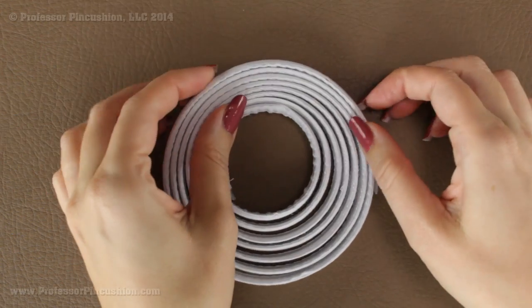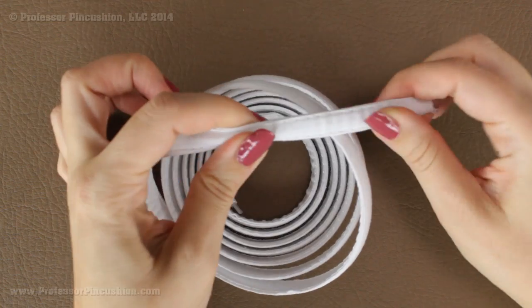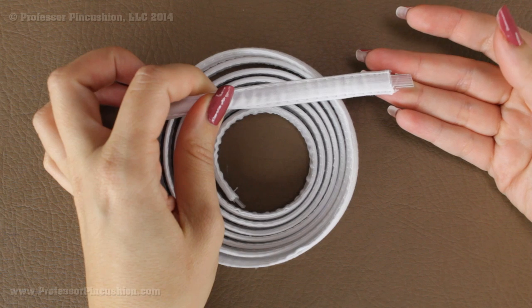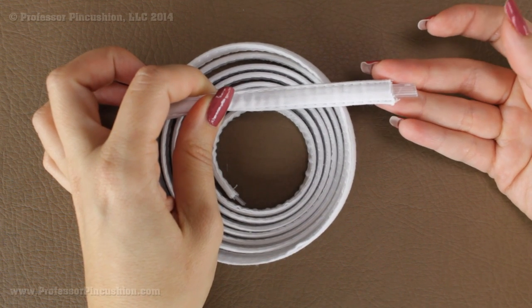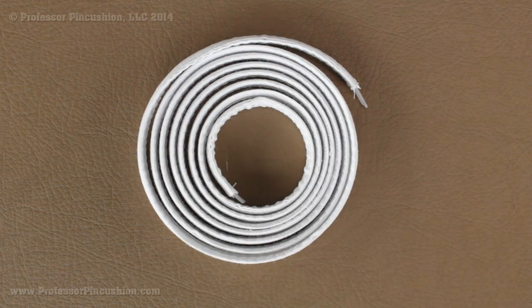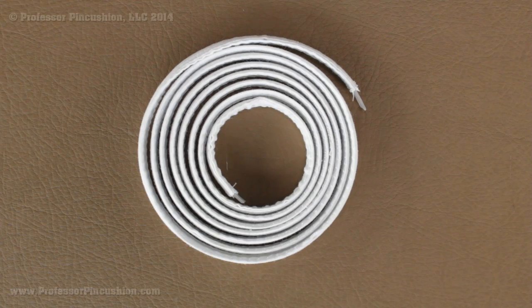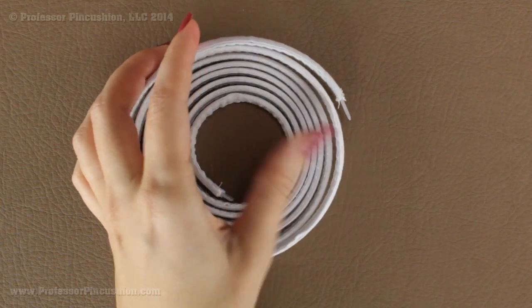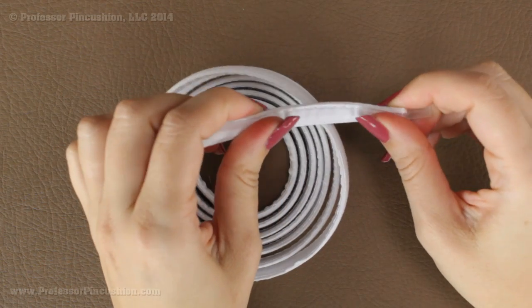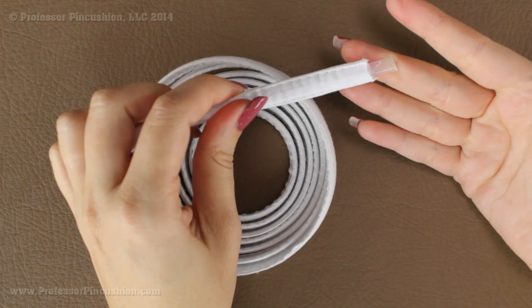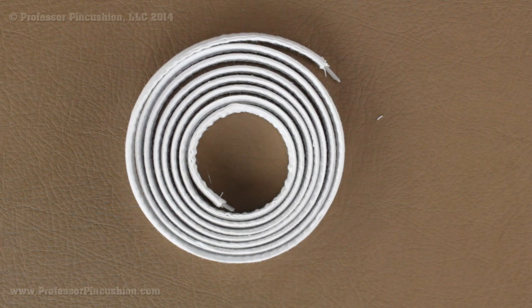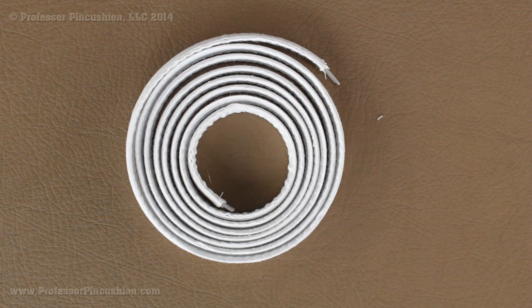Next we have plastic boning. This is also called Featherlite in the store and you can buy this in a package or you can buy it by the yard. Now this is the one that you usually see requested on the back of patterns because it's the one that you can normally find in most fabric stores. The other ones you'll probably have to get at a specialty shop or online.